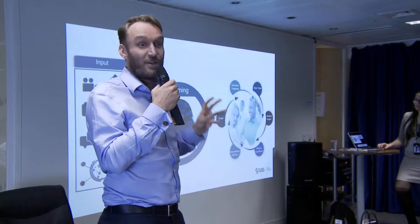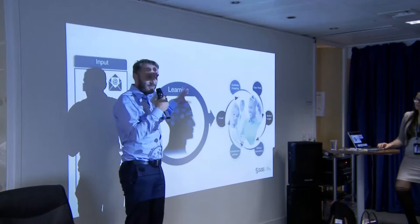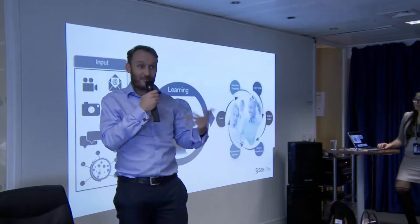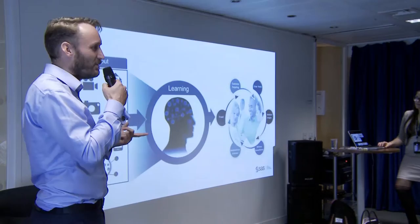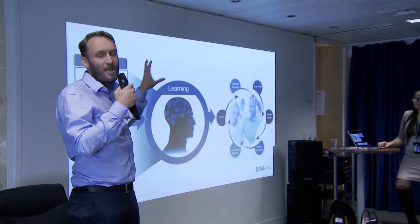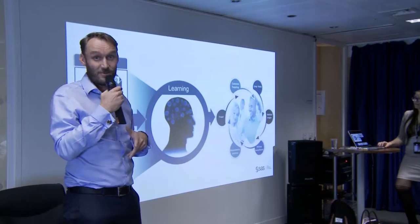Data comes into this process, we then learn from it and make some sort of decision — whether or not a transaction is fraudulent, whether or not a chip is about to fail. And then there will be a feedback loop to inform that process and learn from the decisions that we've made, whether those decisions are right or wrong.